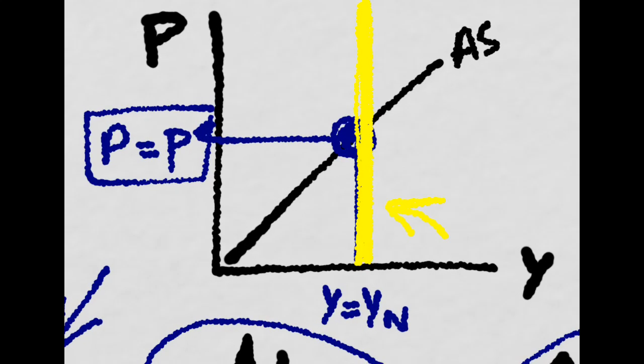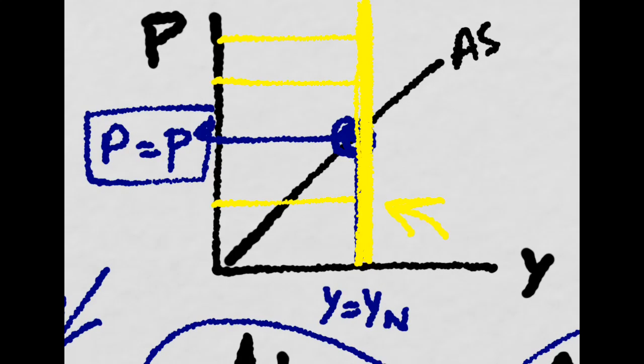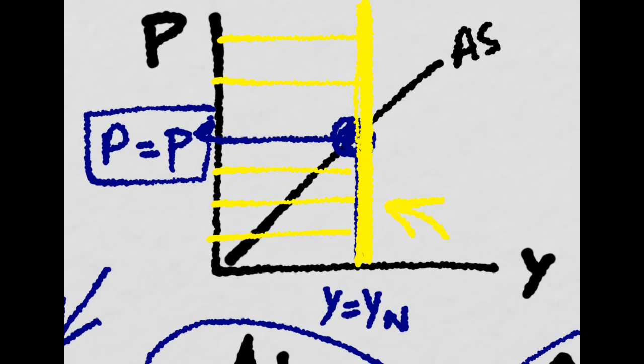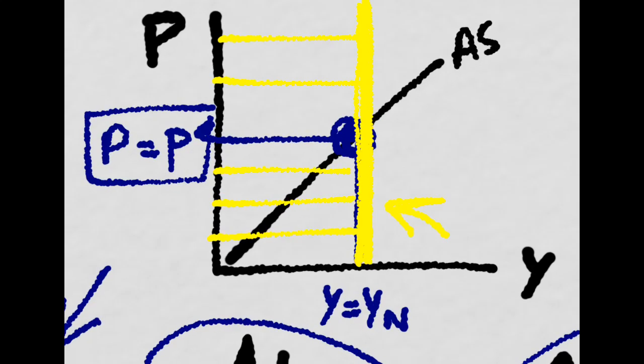And along this vertical line, prices equal the expected level of prices. But you'll see that later on.